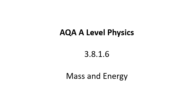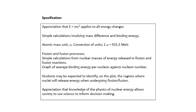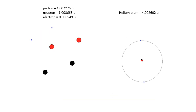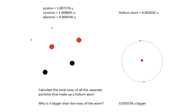AQA A-level physics — mass and energy. This bit of the specification is what we're going to do. Look at this diagram. On the left, we've got two protons, two neutrons, two electrons. On the right, we've got a helium atom. One would expect them to have the same mass. If you work out the total mass of all the separate particles that make up the helium atom, it's bigger than the mass of the atom — it's 0.030378 atomic mass units bigger.